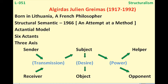Greimas also talks about three axes around which any plot revolves. The first is desire — the subject always has a desire for the object, so subject and object are connected through the axis of desire. The second is power — the helper provides assistance to the subject, and the opponent struggles against the subject, so both relationships involve the axis of power. The third is transmission — the sender and receiver are connected to the subject through the axis of transmission, providing a target or mission.